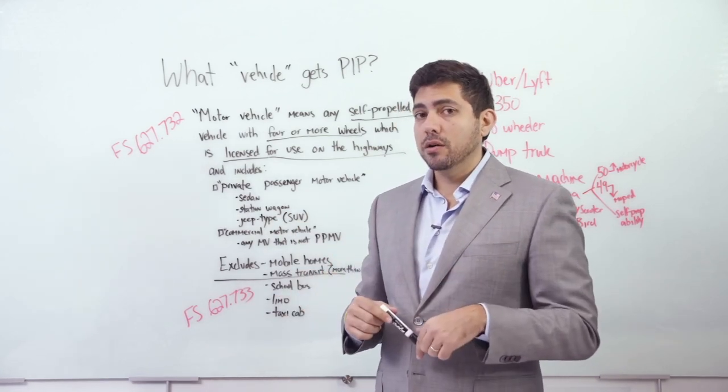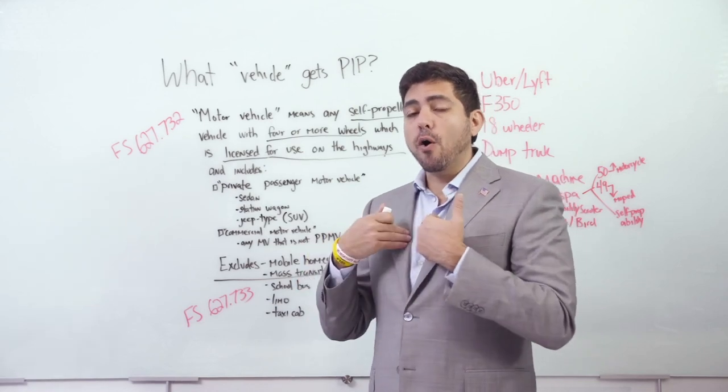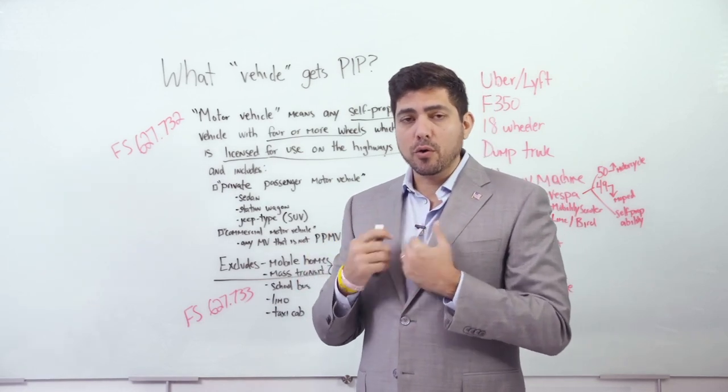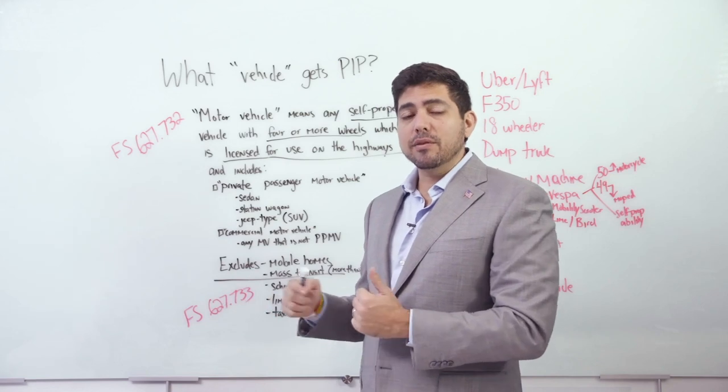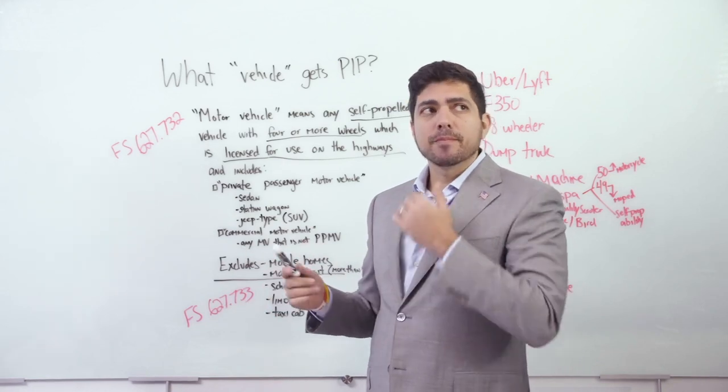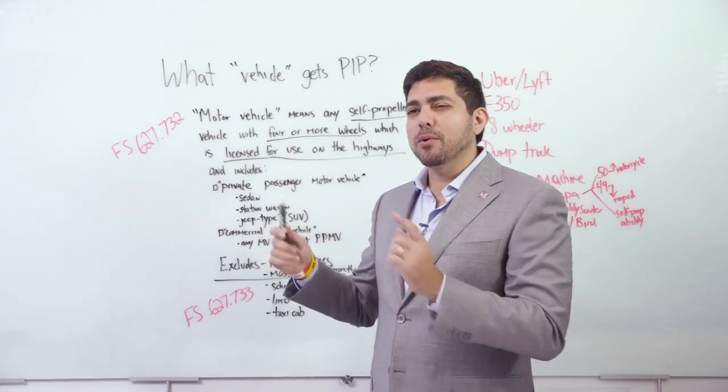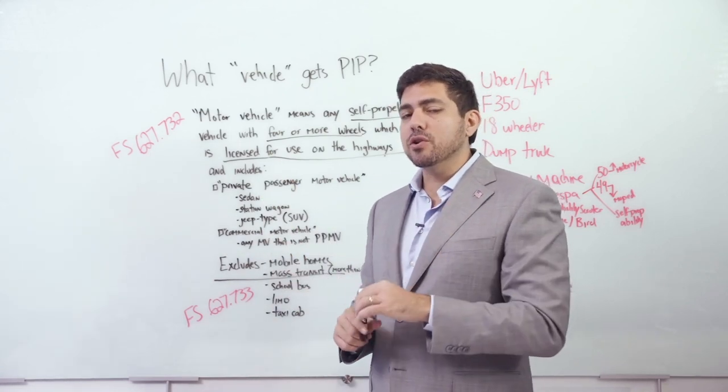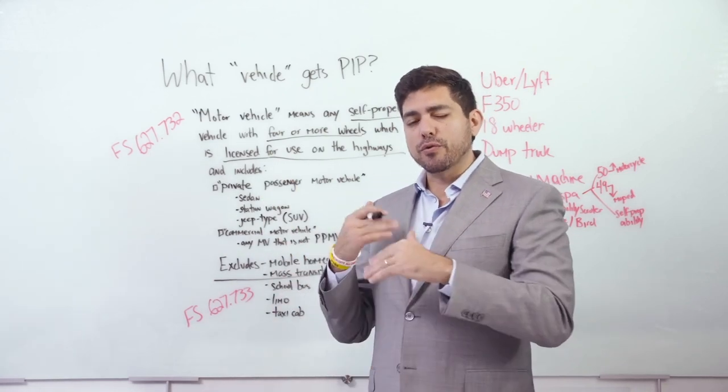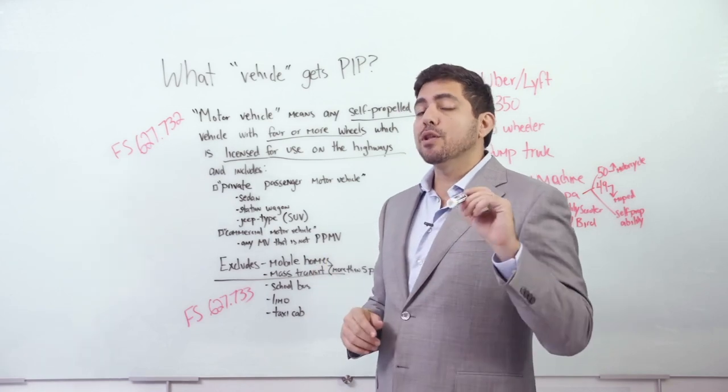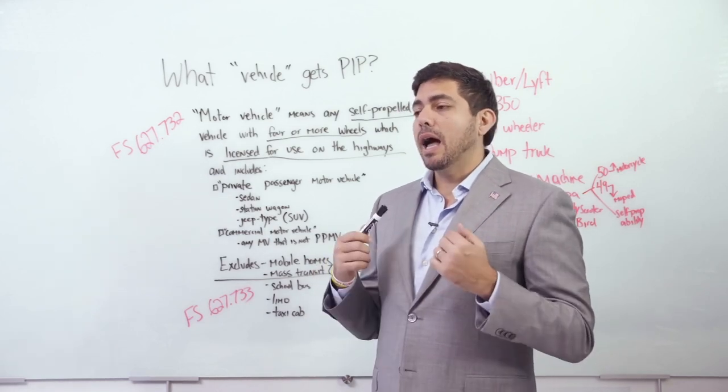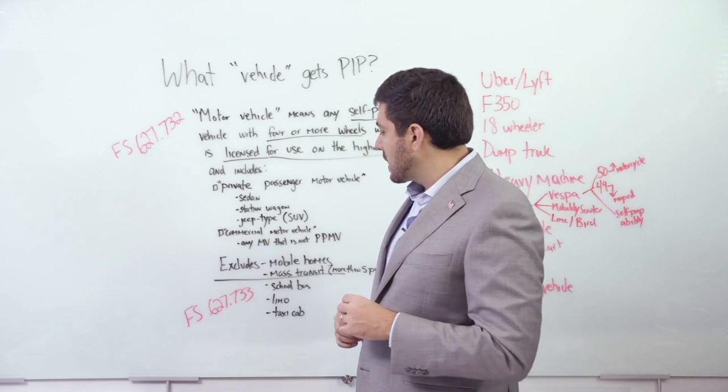I'm Uber driving at night and I get into an accident. Regardless of fault. Remember, PIP has nothing to do with fault. Is that driver covered? So the driver usually has their own policy with Infinity, Geico, Progressive, whatever. They're going to say, hey man, we didn't insure you to drive people around all day and be on the roads for eight hours a day driving around.